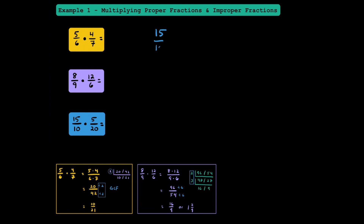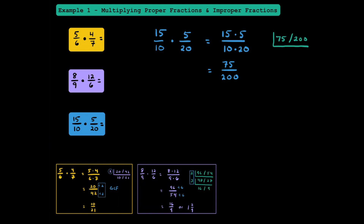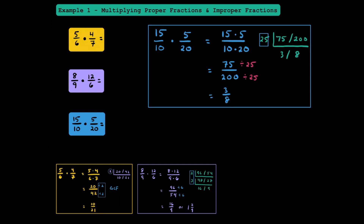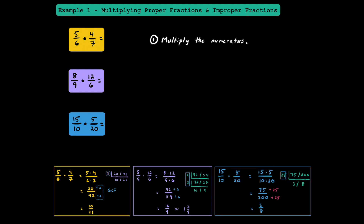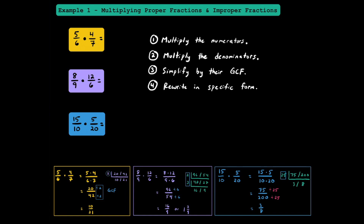Let's try one more. We have 15 tenths multiplied by 5 twentieths, which gives us 15 times 5 over 10 times 20, or 75 over 200. These aren't relatively prime, so I'll use the ladder method. I know 25 fits into 75 three times, and 25 goes into 200 eight times — think of it as 25 cents going into $2 eight times. Since 3 and 8 are relatively prime, 25 is our GCF. Dividing numerator and denominator by 25, we get a final answer of 3 eighths. In summary: multiply the numerators, multiply the denominators, simplify by their GCF, then rewrite as an improper fraction or mixed number.